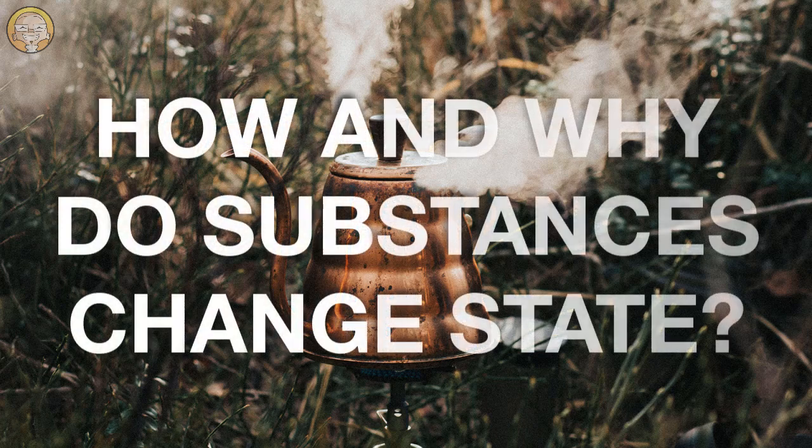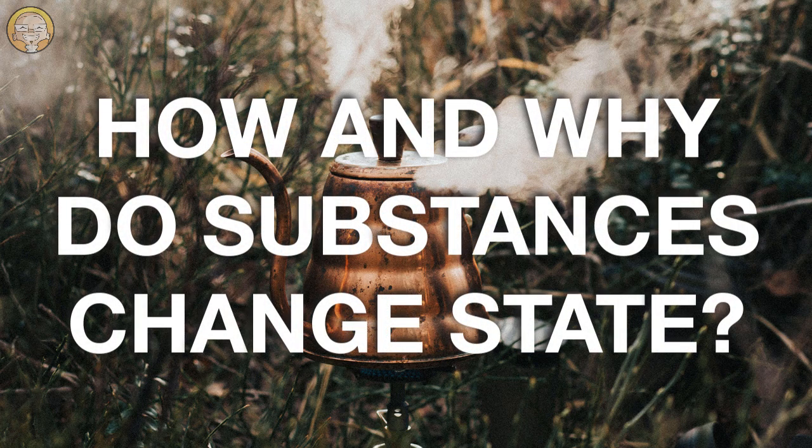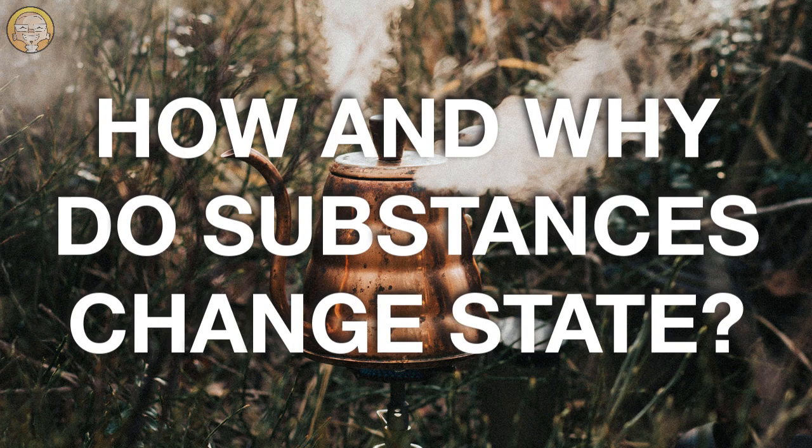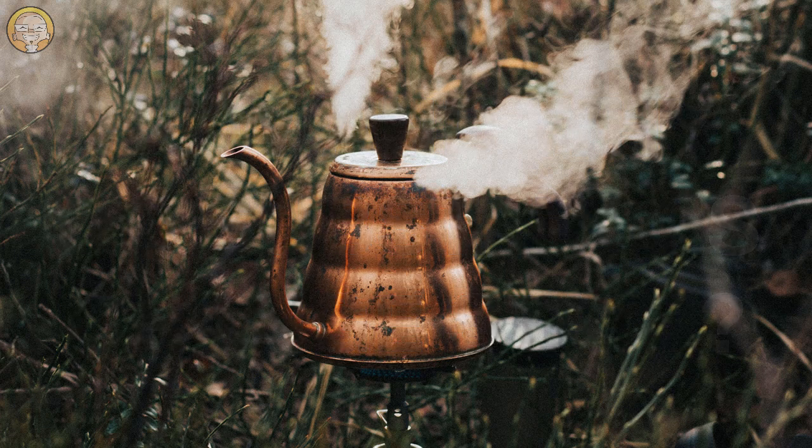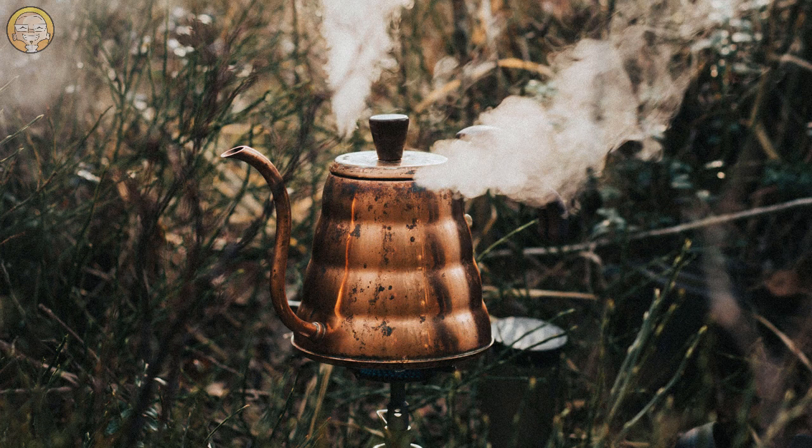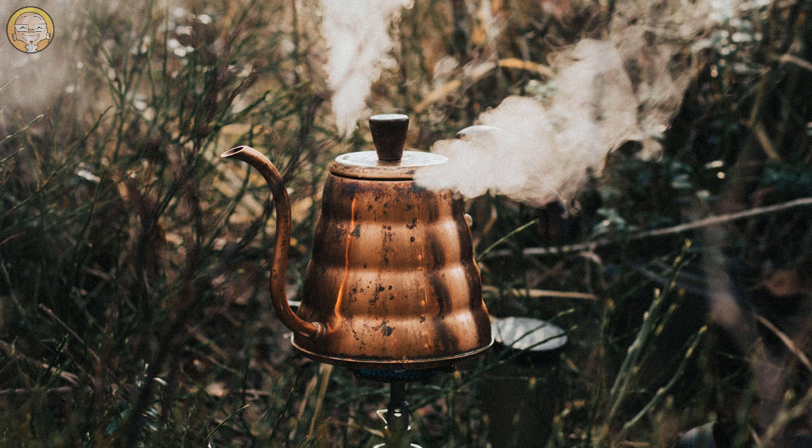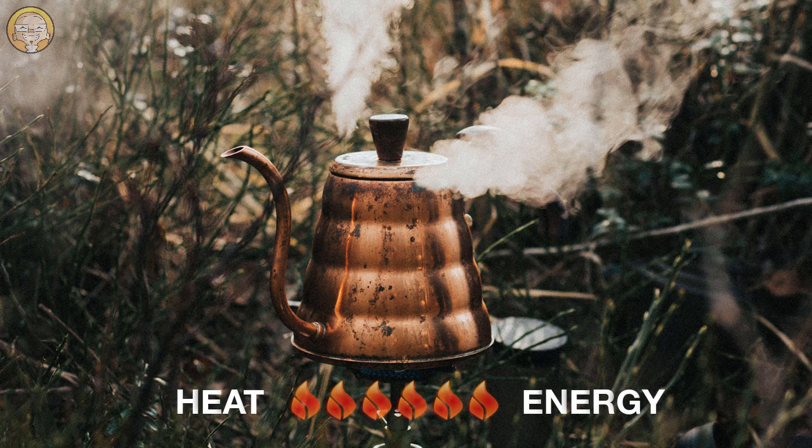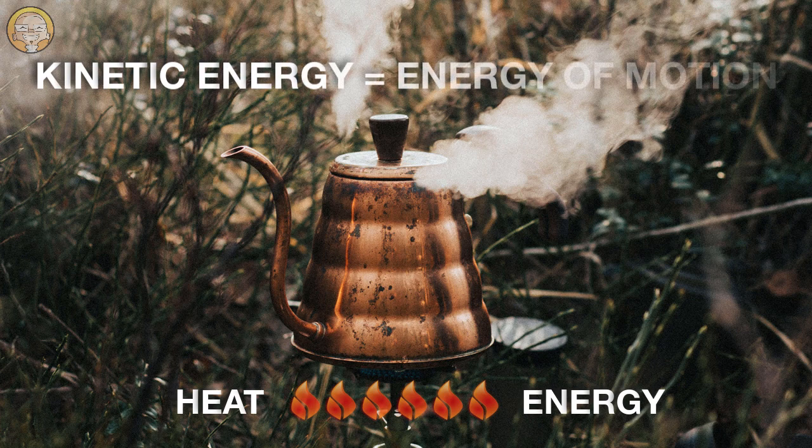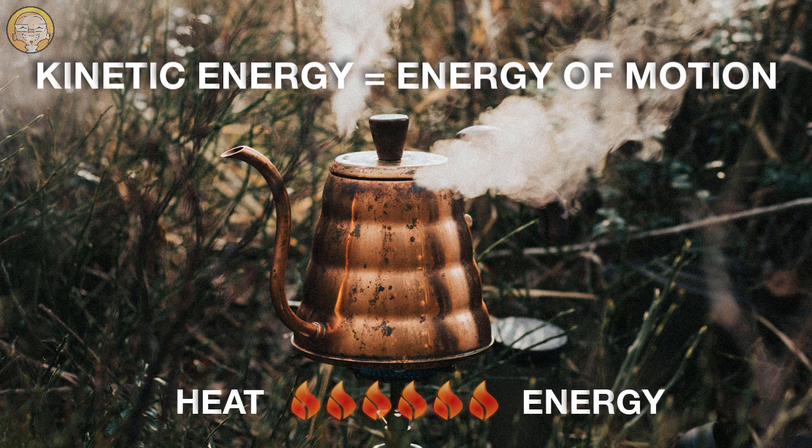This brings us to the question: how does a substance change from one state to another? For example, this boiling water is changing from liquid to gas. Why? The answer is heat energy. Adding heat energy gives particles more kinetic energy. If a particle has more kinetic energy, it moves around faster.